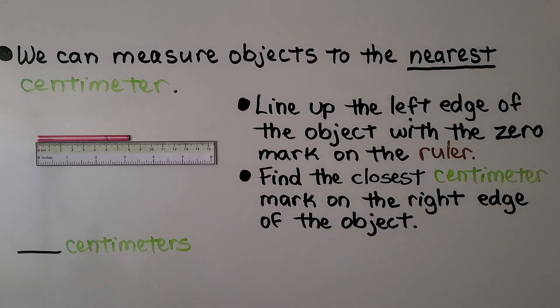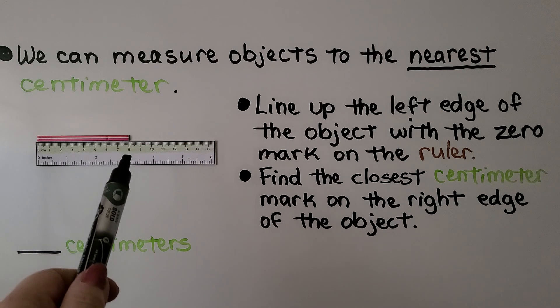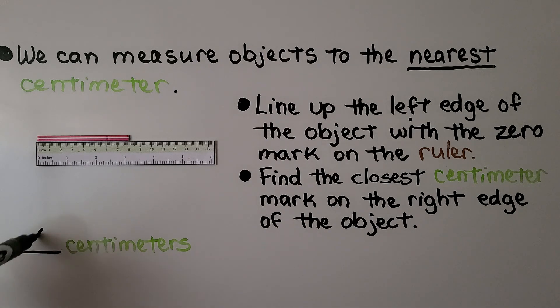We find the closest centimeter mark on the right edge of the object. This is very close to the 8, so we can say this is 8 centimeters. It's about 8 centimeters because we're measuring to the nearest centimeter.